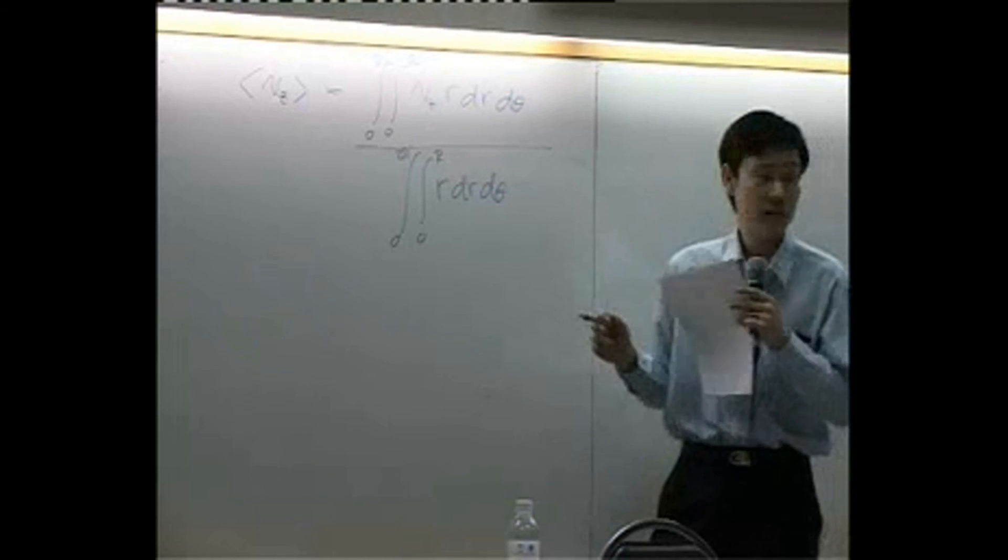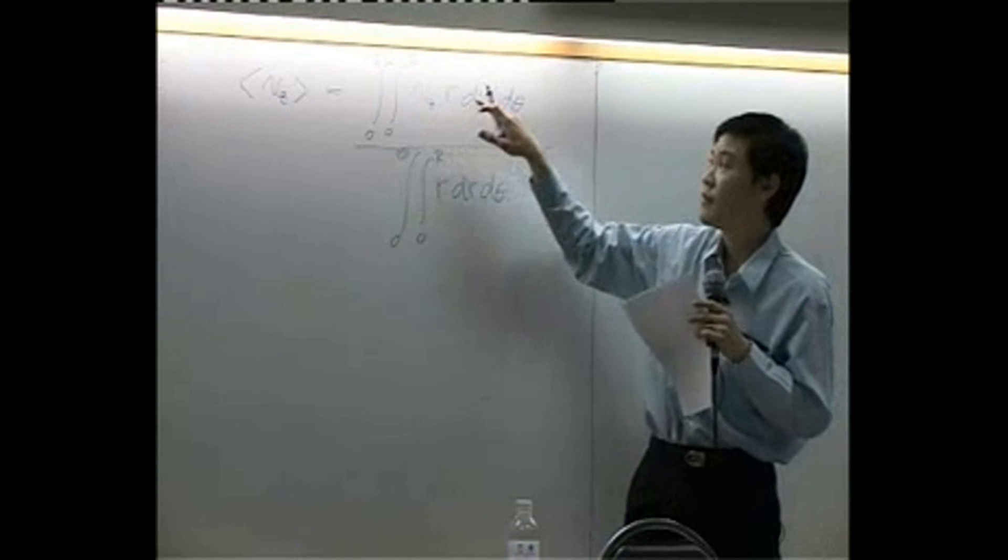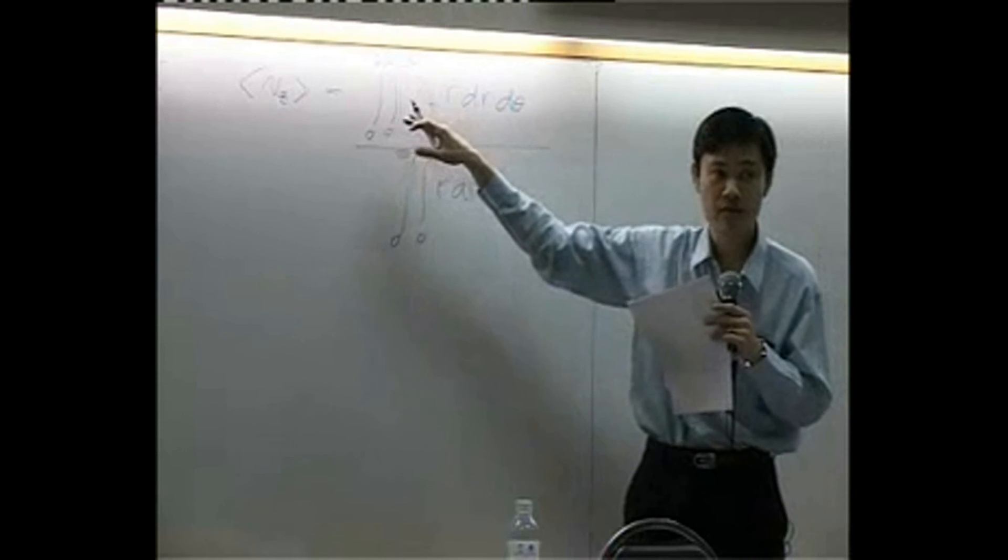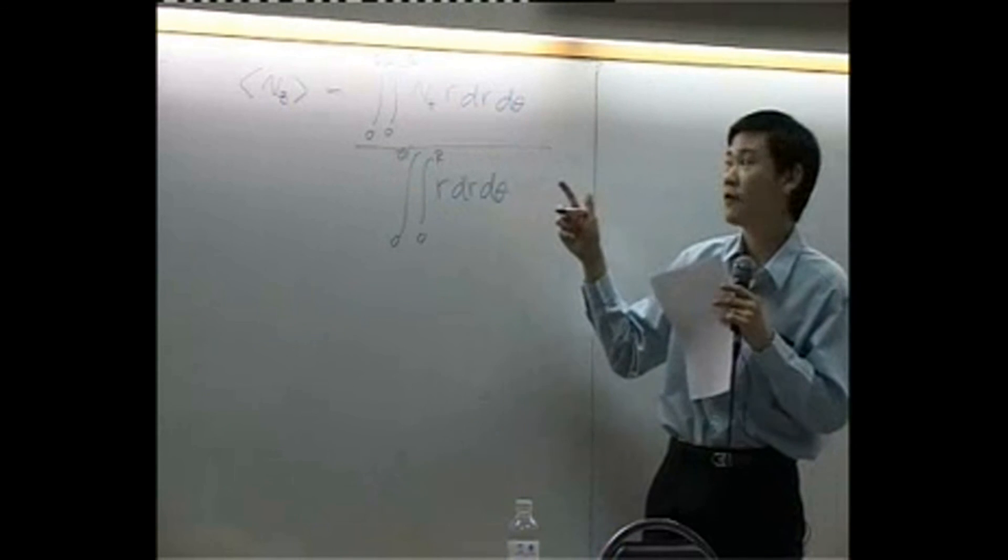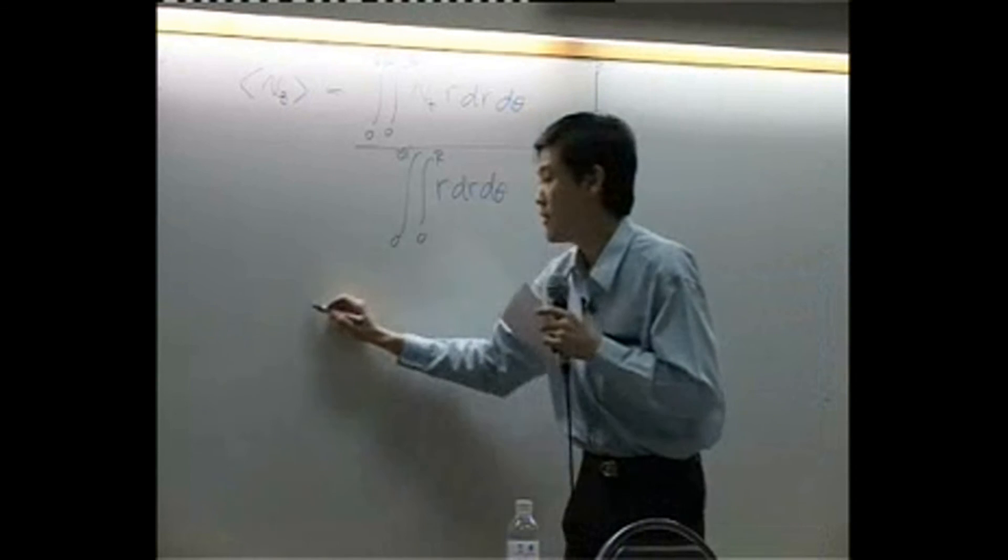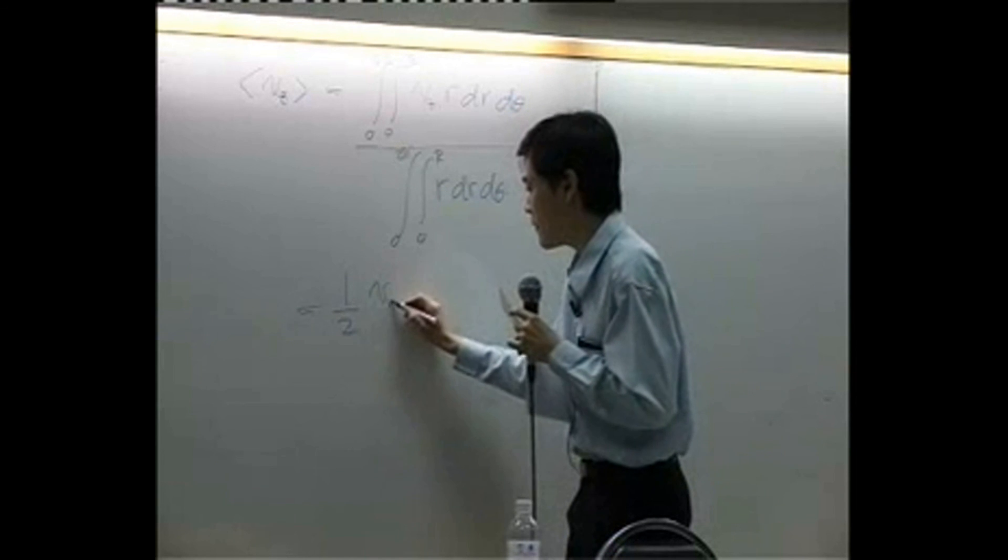So you bring that velocity profile down here, multiply by another r, integrate it twice, which is not difficult at all because it's only one r left. If you rearrange the equation, you get half of the maximum.